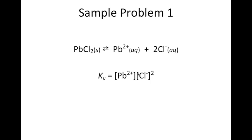In the third equation, lead chloride solid dissociates to form lead ions and two moles of chloride ions. We write the equilibrium expression as products over reactants. Lead ions are aqueous, so we include that. Chloride ions are aqueous, and since there is a coefficient of two, we put a squared exponent on the chloride concentration. The reactant is in the solid phase, so we do not include it. That gives us our final Kc expression.